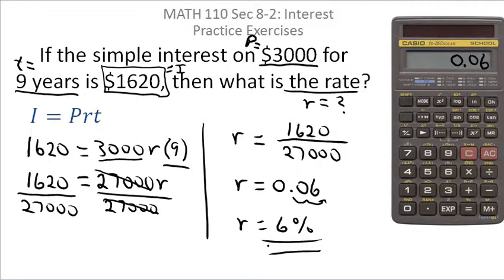So if you invest $3,000 for nine years and end up with $1,620 in interest, the interest rate for that, simple interest rate for that account would be 6%.